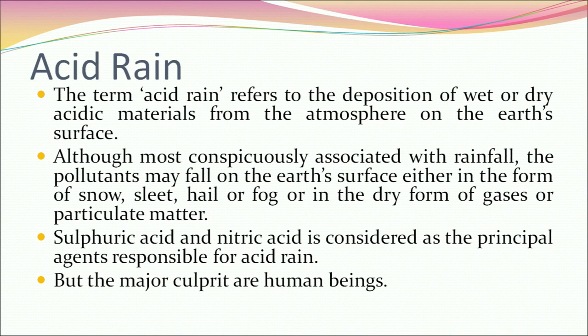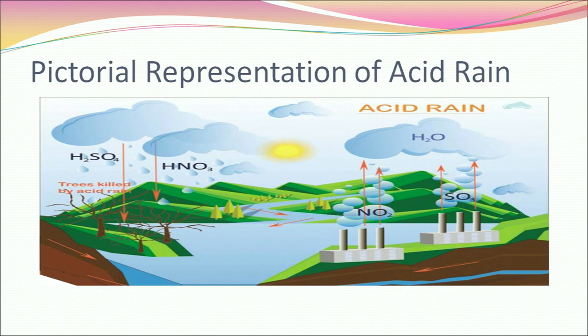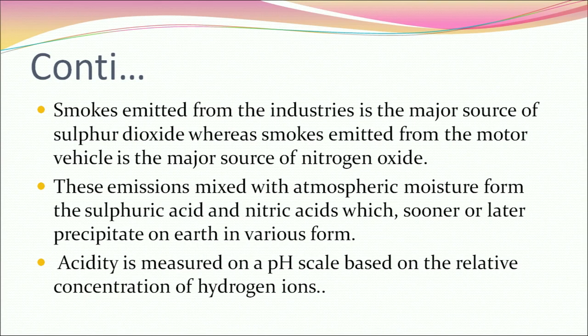Acid rain refers to the deposition of wet or dry acidic materials from the atmosphere onto the earth's surface. Although most conspicuously associated with rainfall, pollutants may also fall as snow, sleet, hail, fog, or in dry form as gases or particulate matter. Sulphuric acid and nitric acid are the principal agents responsible for acid rain. Smoke emitted from industries is the major source of sulphur dioxide, while smoke from motor vehicles is the major source of nitrogen oxide. These emissions mix with atmospheric moisture to form sulphuric and nitric acids, which precipitate on earth in various forms.